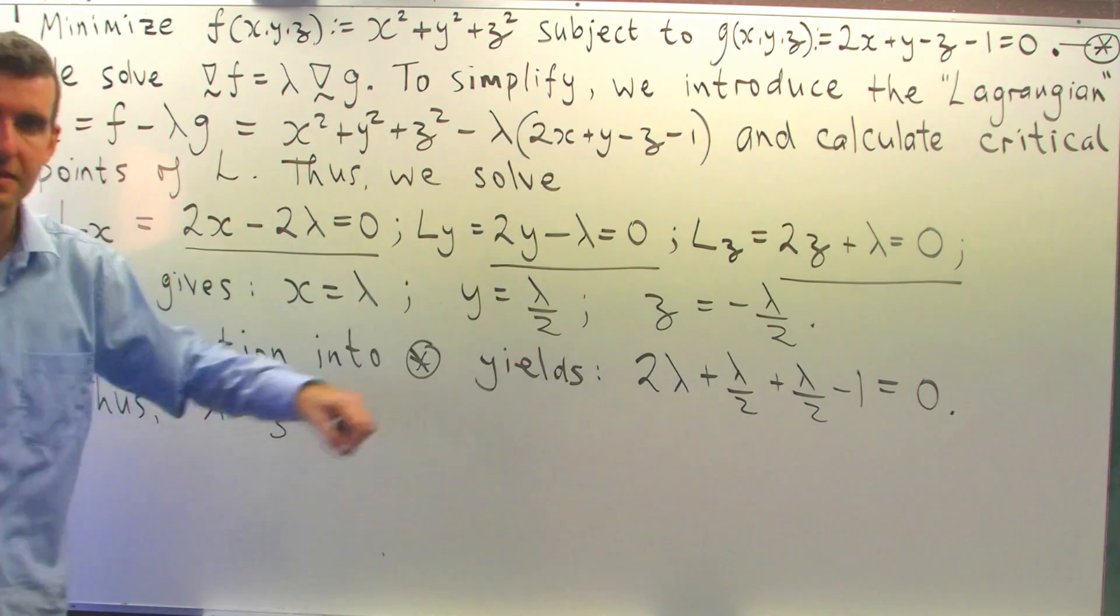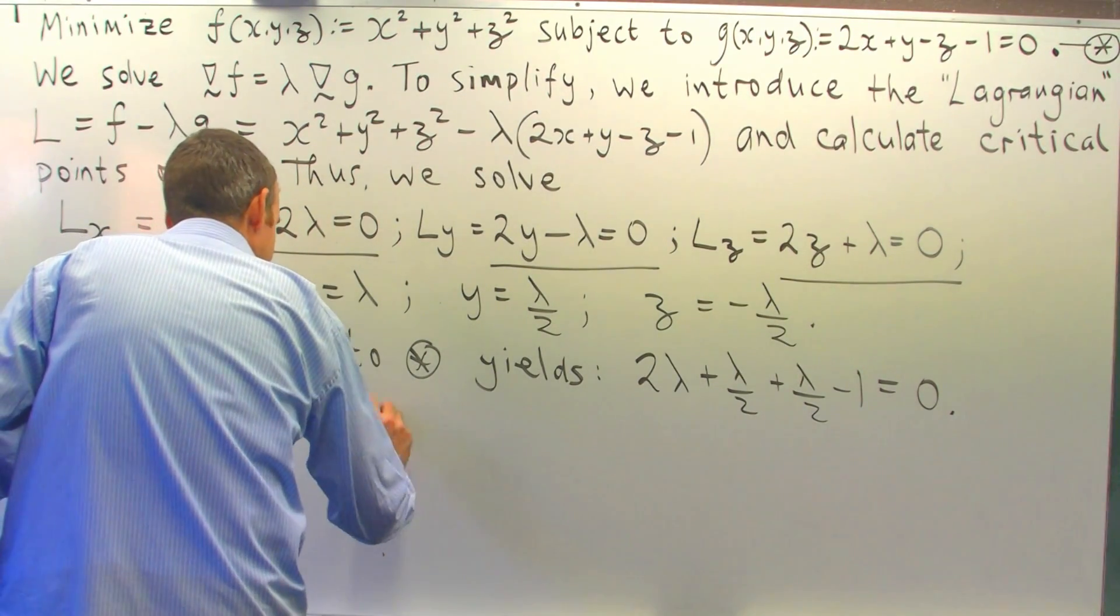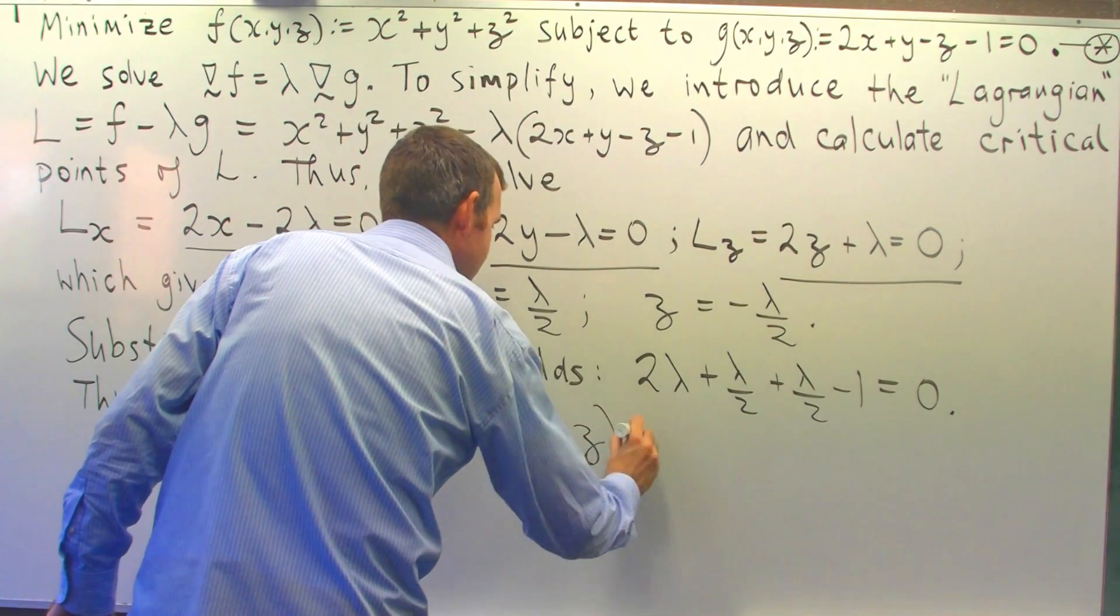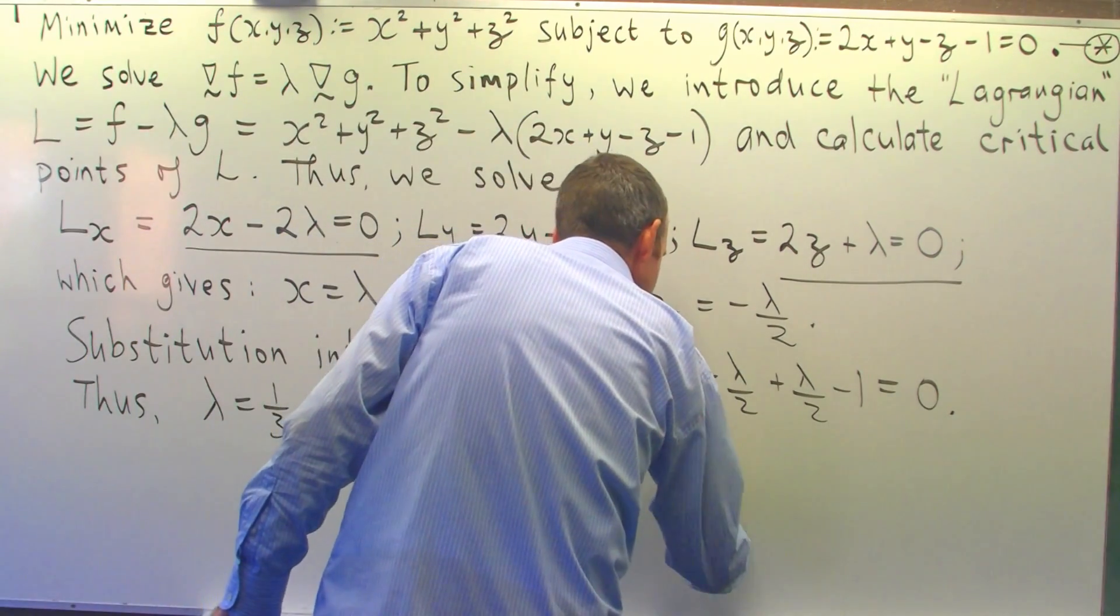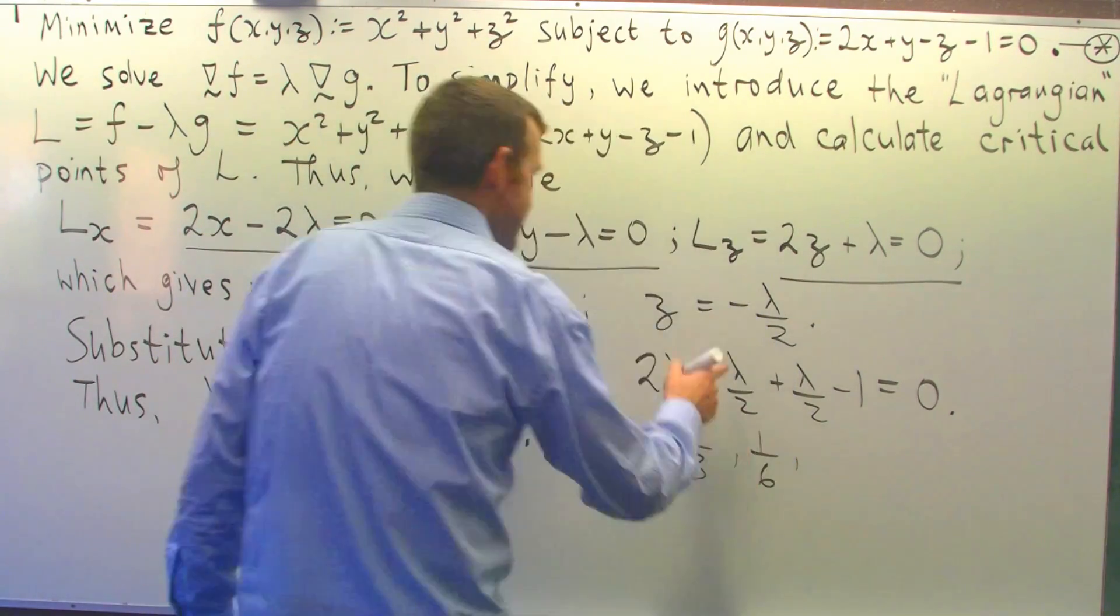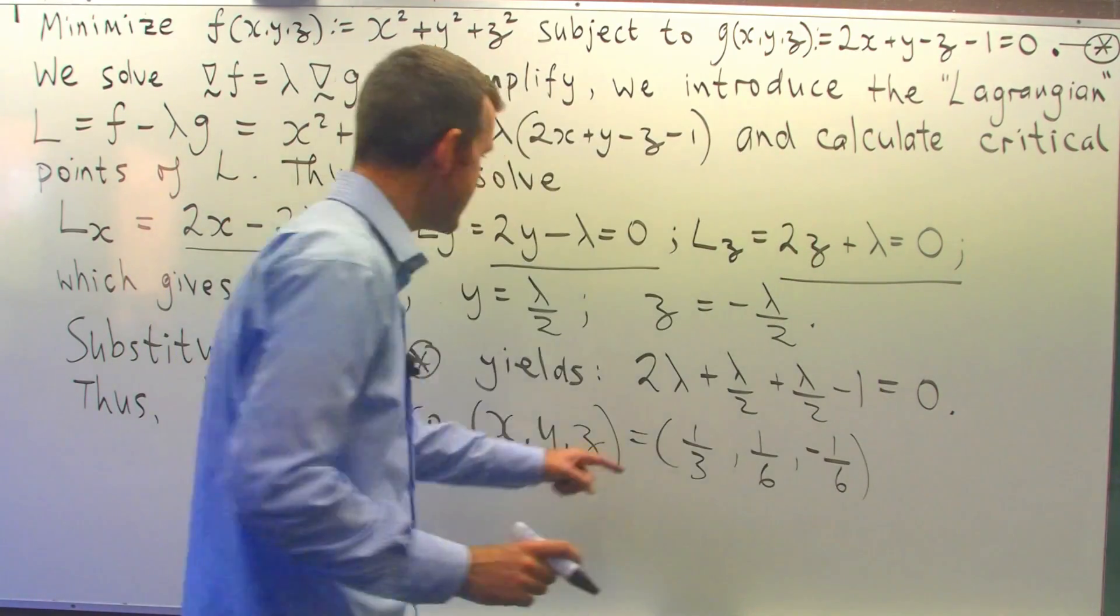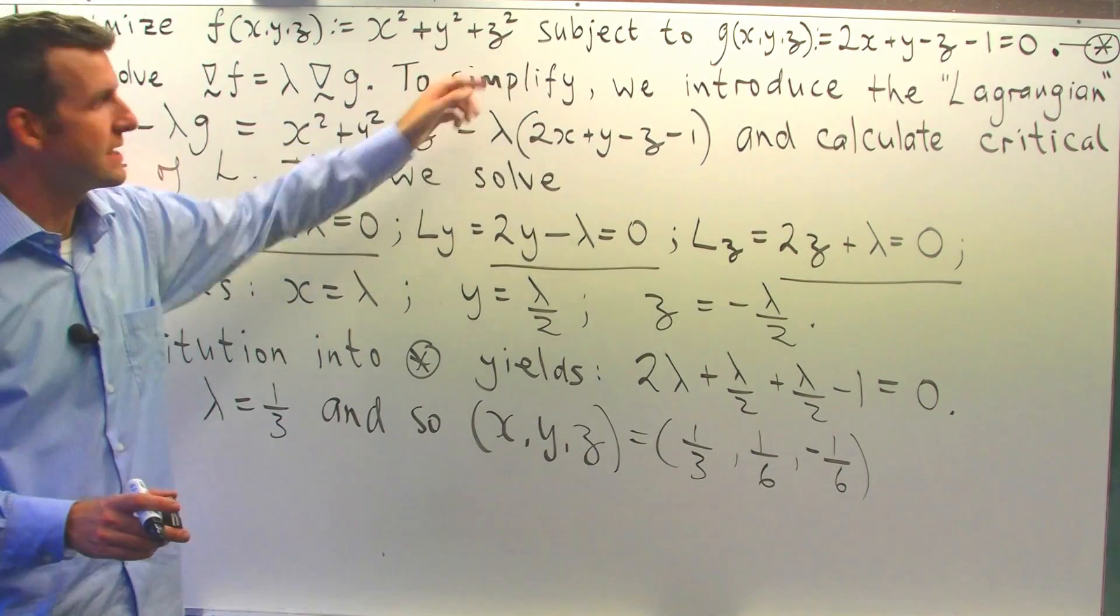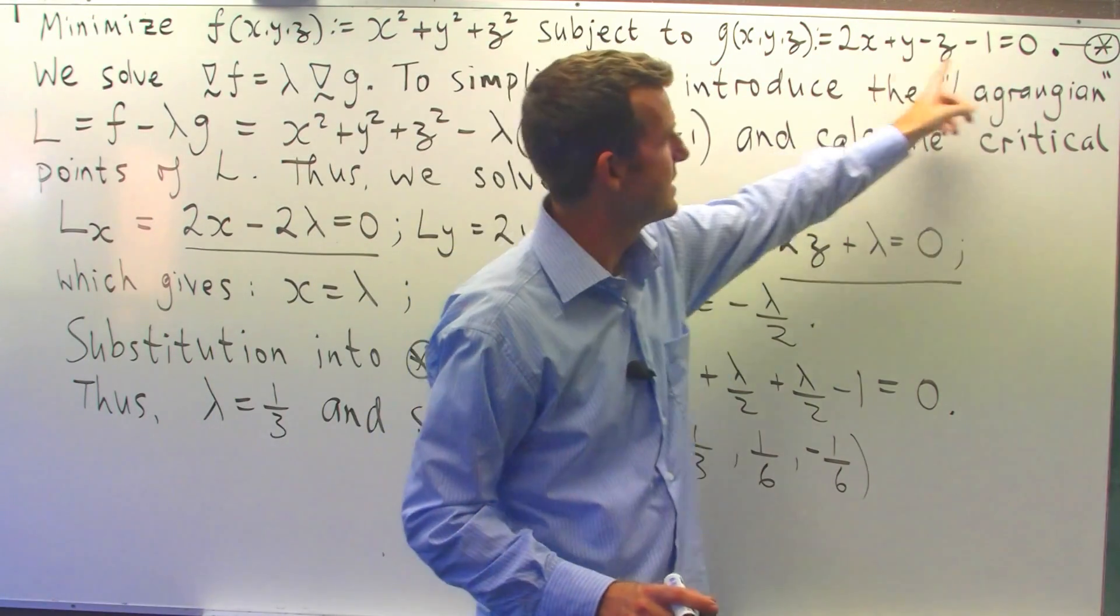So now we can go back here and work out the point that we're interested in. So x will be 1 third, y will be 1 sixth, and z will be minus 1 sixth. So this point here is the point that gives f a minimum subject to this constraint.